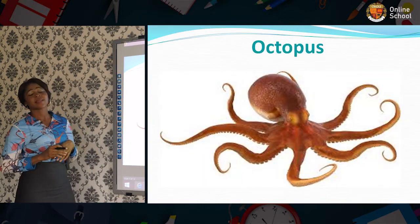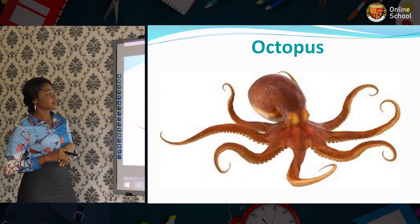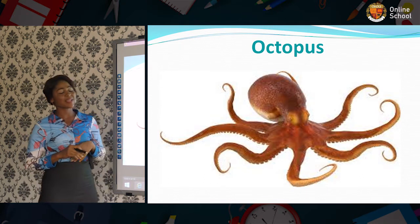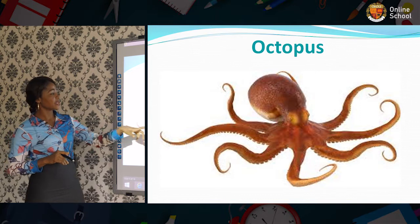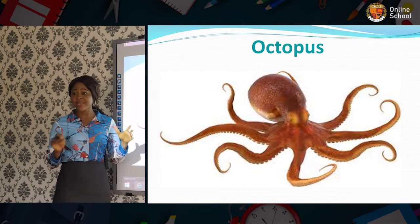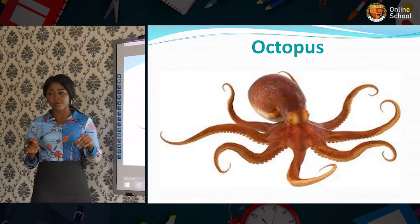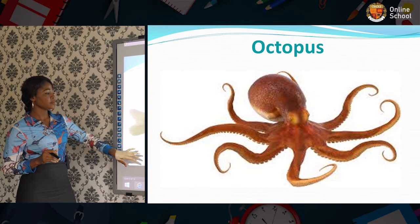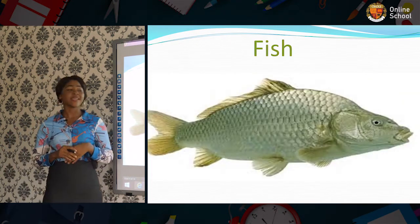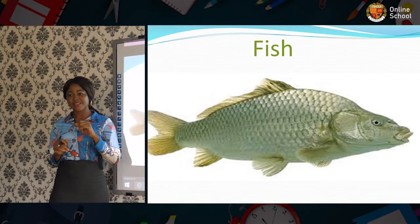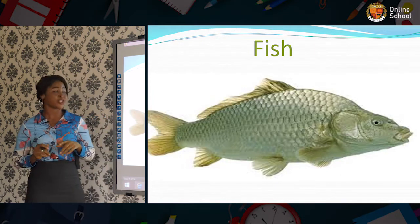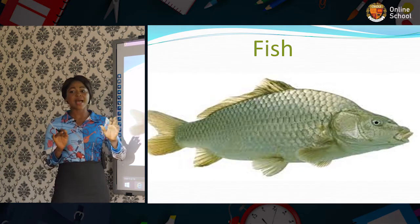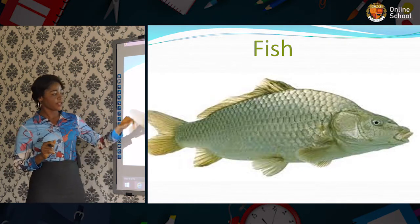We're looking at the pictures of the water animals. Here with me I have octopus — look at the picture here, so wherever you see it you'll be able to recognize it. The second one is fish. I believe you know fish; you have been eating fish and you have been seeing fish. So this is one of the water animals — it's fish.